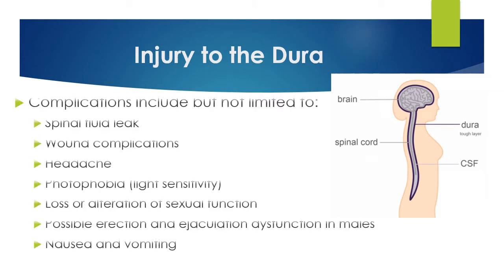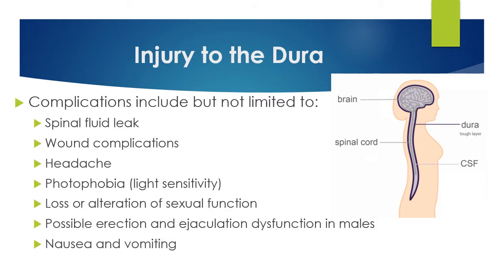Injury to the dura — the thick membrane surrounding the brain and spinal cord, shown as the dark purple outline in the picture — can occur during surgery and could lead to a spinal fluid leak. Symptoms can include headache, photophobia (light sensitivity), loss or alteration of sexual function, possible erection and ejaculation dysfunction in males, and nausea and vomiting.